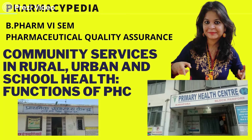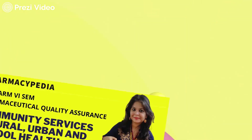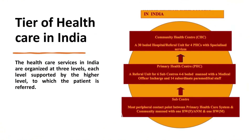This topic has been taken from B. Pharm 6th semester Pharmaceutical Quality Assurance, Unit 1. When we talk about the healthcare system in India, it exists in different tiers. It starts with sub-centers, which are located in different parts and act as a connecting center between the primary healthcare system and the community. After sub-centers are public health centers, which are basically the referral units for six sub-centers.